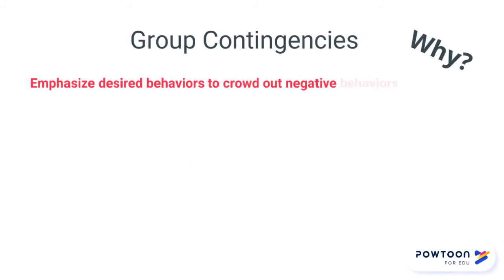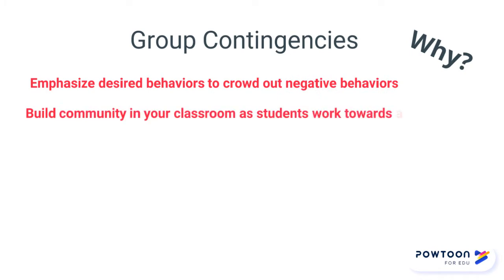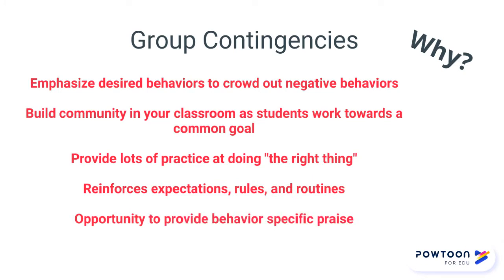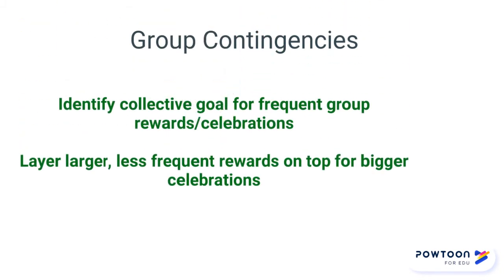Use group contingencies in your classroom to emphasize desired behaviors and crowd out negative ones, to build community, to provide lots of practice for students to do the right thing, to reinforce your expectations, rules, and routines, and to give you opportunity to provide behavior-specific praise. Start small — identify a few times during your day where you could use group contingencies to change undesirable behaviors to desired behaviors. Then as you get better, you can layer larger, less frequent rewards on top for bigger celebrations.